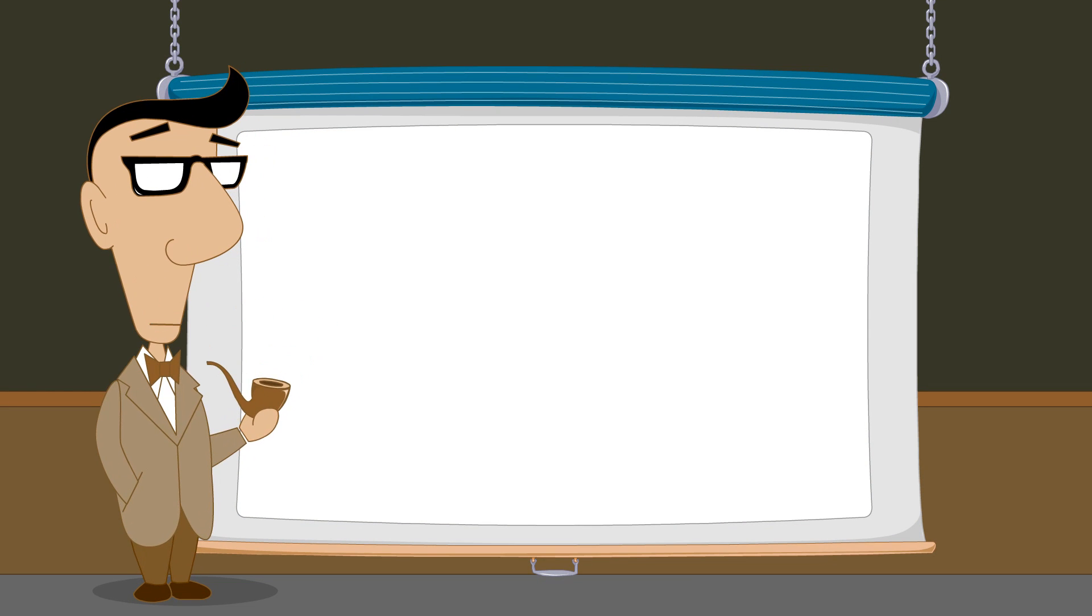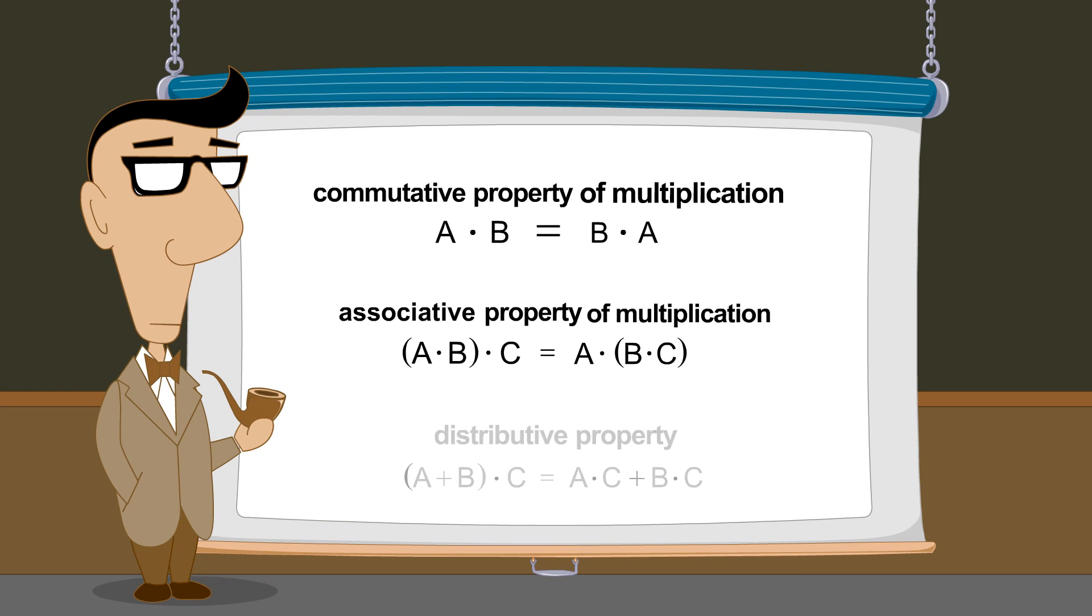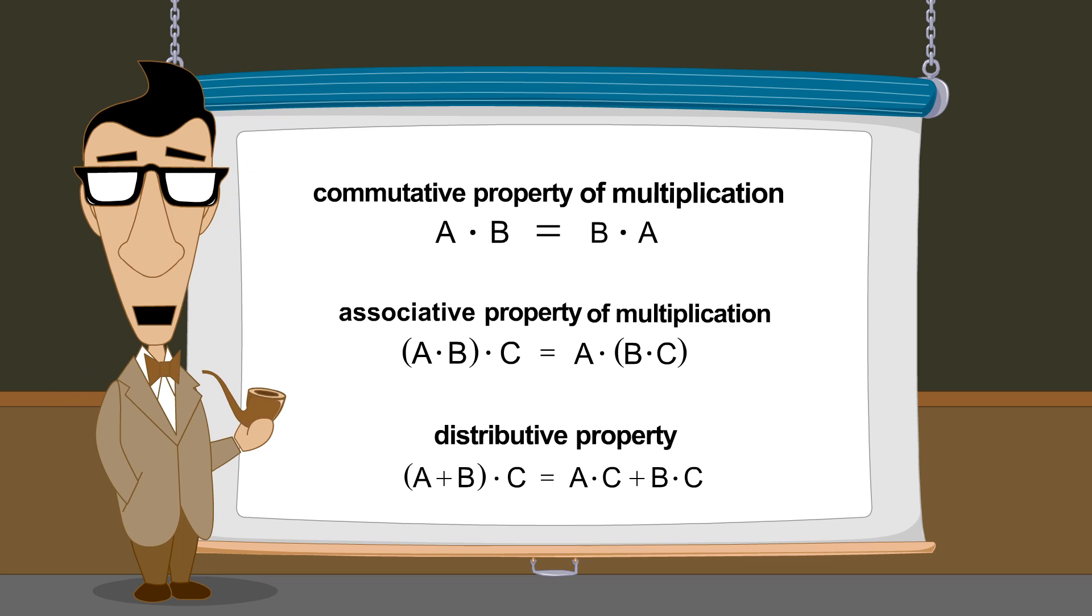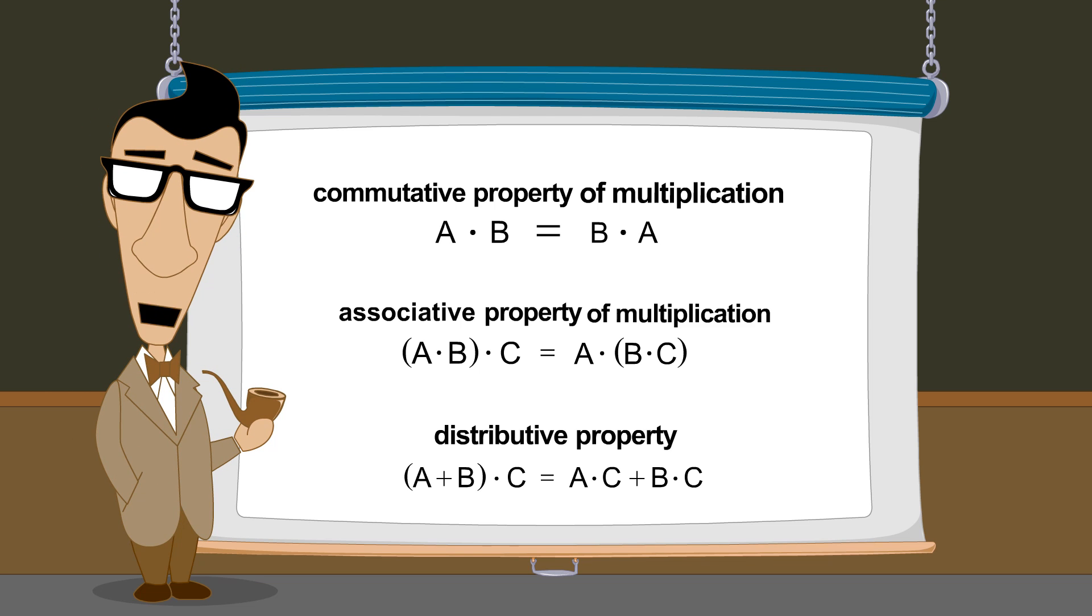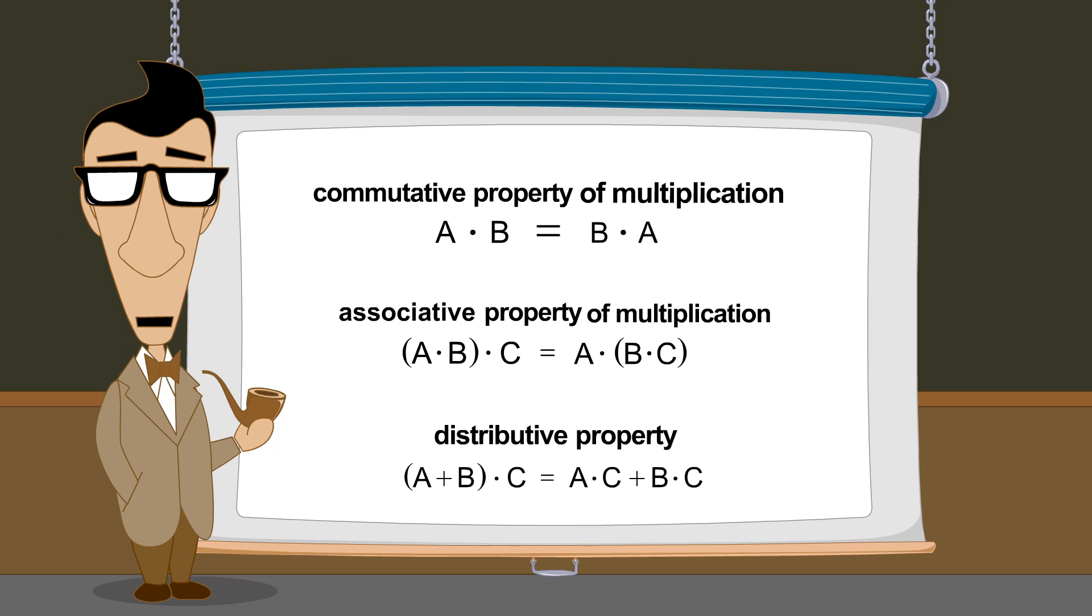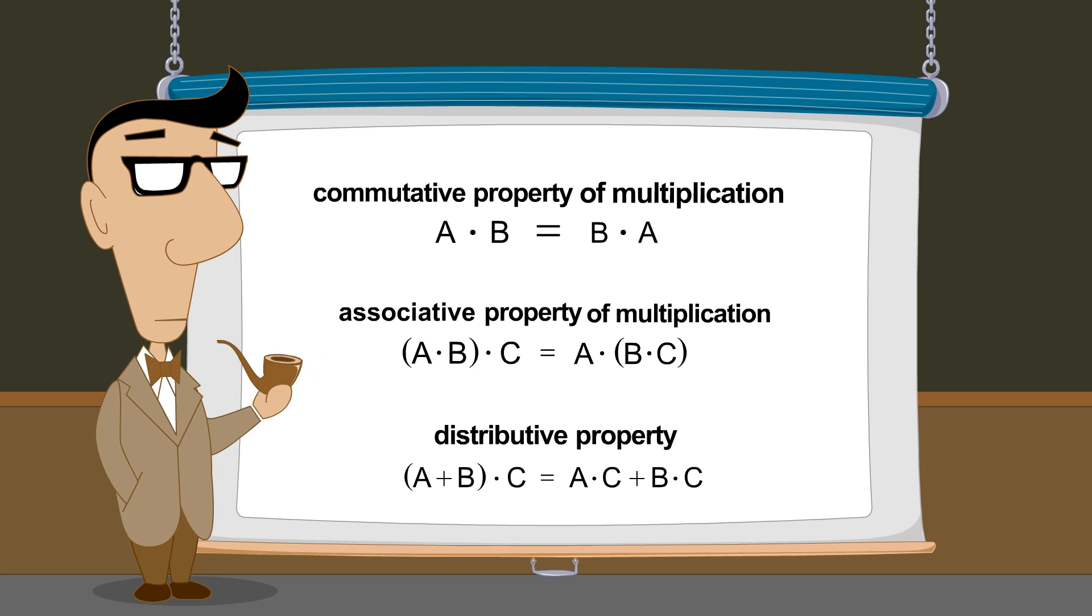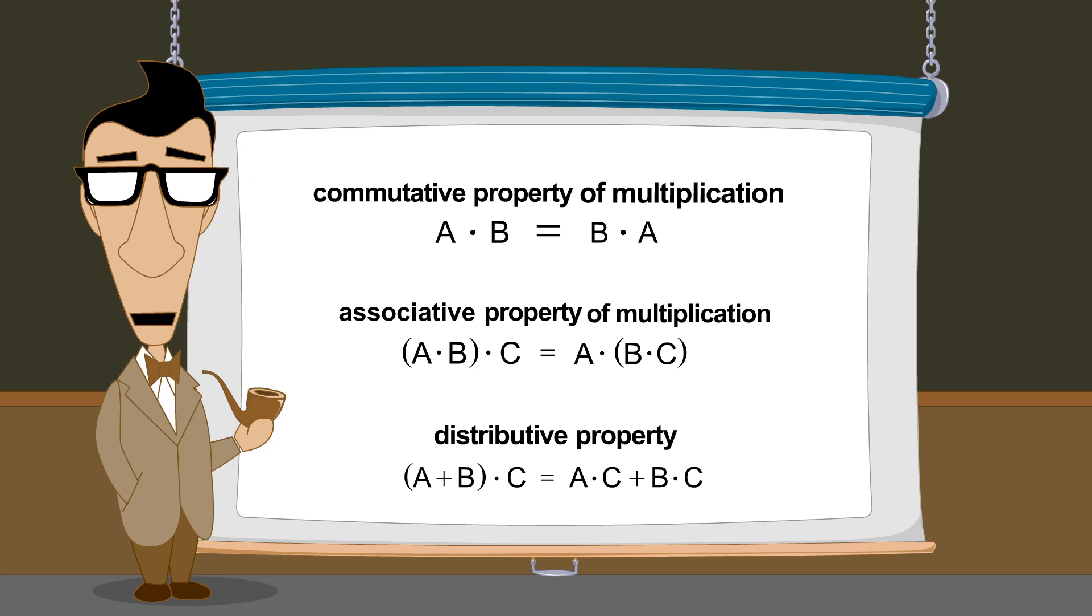As you can see, the commutative, associative, and distributive properties are powerful tools which we can add to our tool chest of mathematical tricks. With them, we can manipulate groups of numbers and mathematical operations and change their form into equivalent forms which may be simpler or more useful.